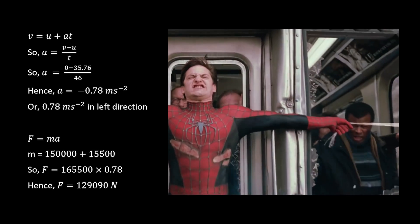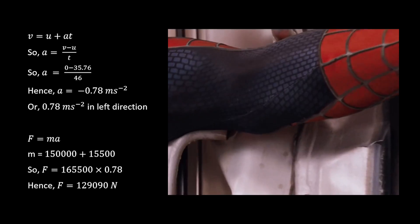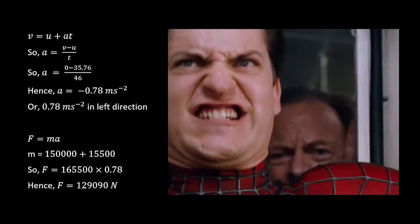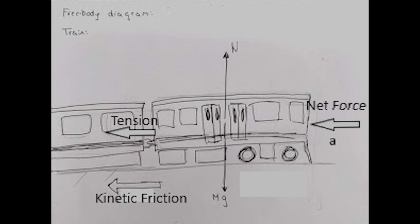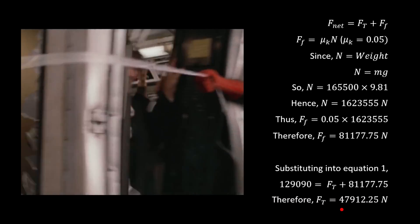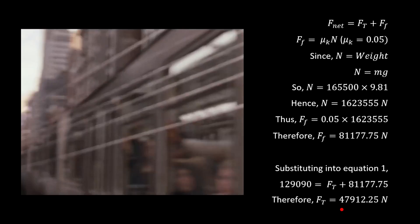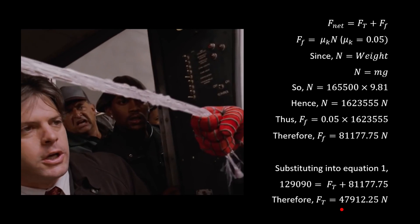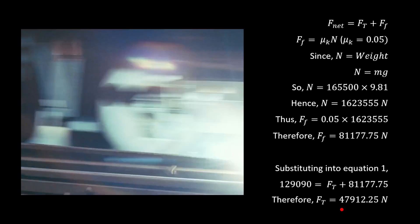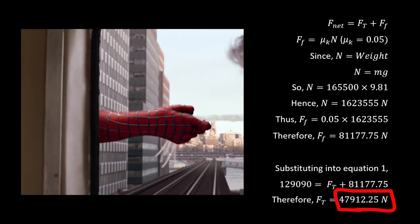We can then use Newton's second law of motion to find the force acted on the train in the backward direction using the mass of the train consisting of the passengers and the acceleration. As presented in the free body diagram, the forces that contribute to the net force acting on the train are tension of the web as well as the kinetic friction. We can find the kinetic friction using the formula mu into normal force. We know that the normal force acting on the train is equal to the mass of the train multiplied by the gravitational force acting on it.